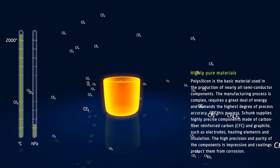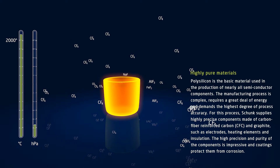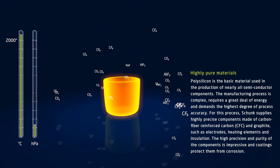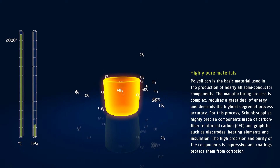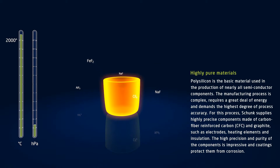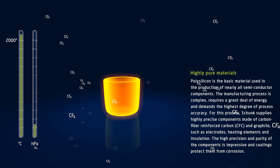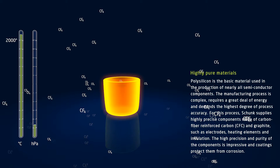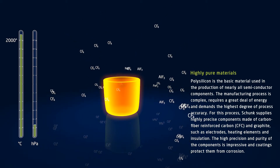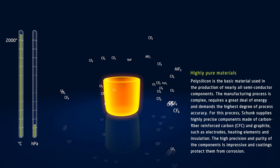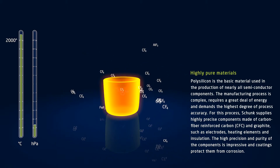Polysilicon is used as the basic material for manufacturing most computer chips. Electronic components and circuits function due to the special electrical properties of silicon, a semiconductor. The production of high-quality polysilicon is an elaborate process, and the requirements for purity are high. For the production of crystalline polysilicon, Schunk supplies highly precise and pure components made of carbon fiber-reinforced carbon, or CFC for short, and graphite — for example, electrodes, heating elements, and insulation.